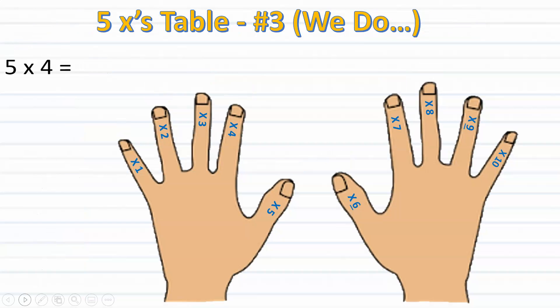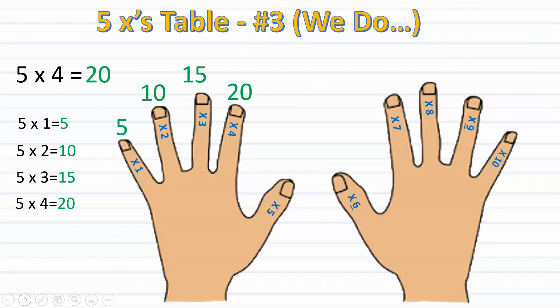Let's solve another one together. This time we're going to solve for 5 times 4. So you should be thinking to yourself, what number am I going to stop skip counting on? If you said the fourth finger, then you're correct. Let's begin. 5, 10, 15, 20. Since I landed on my fourth finger and said 20 last, I know that 5 times 4 equals 20.